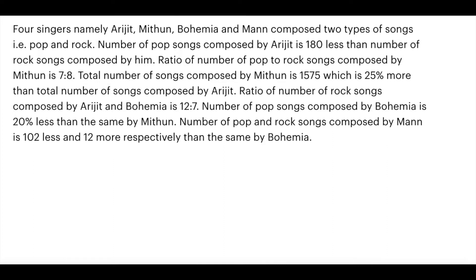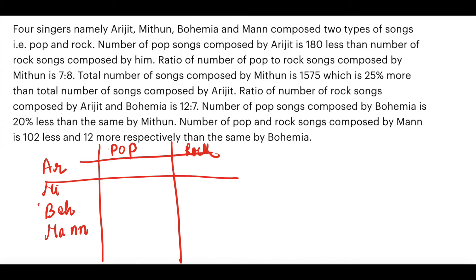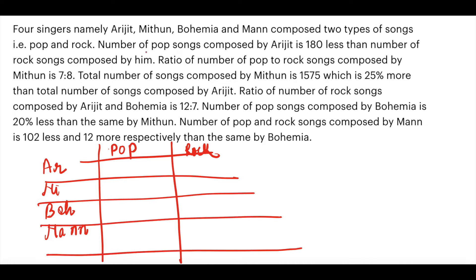Four singers — Arijit, Mithun, Bohemia, and Man — compose two types of songs: pop and rock. Let's make a table. The number of pop songs composed by Arijit is 180 less than the number of rock songs composed by him. So if rock songs is x, then pop songs is x minus 180.